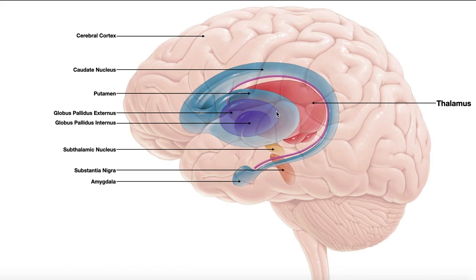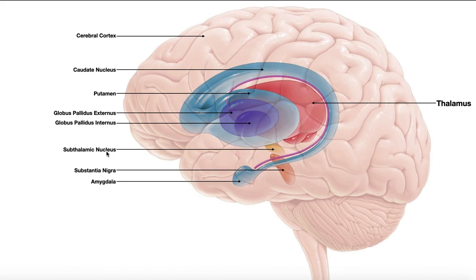In purple, this whole thing is the globus pallidus, and it has two parts: an externus and an internus. The lighter purple on the outside is the globus pallidus externus, and the darker purple part in the center is the globus pallidus internus. Then in red here is the thalamus. We also have two other structures very closely associated in function with the basal nuclei: the subthalamic nucleus, which is directly beneath the thalamus, and the substantia nigra, the most inferior structure shown here in orange.